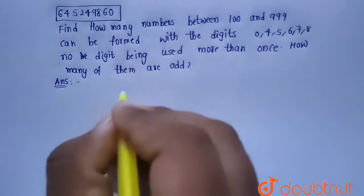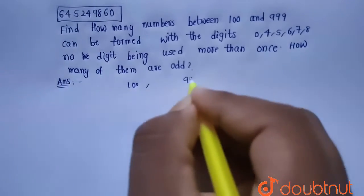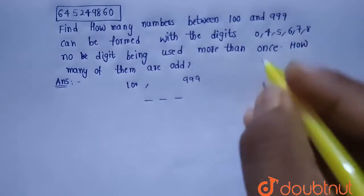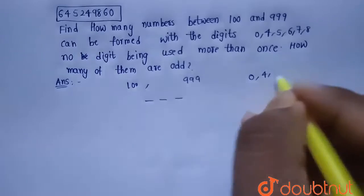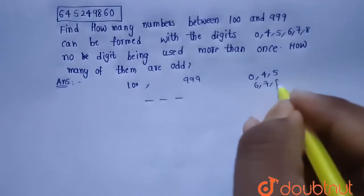So given the number should be between 100 and 999, the number should be a 3-digit number. Now given the available digits are 0, 4, 5, 6, 7, 8, total six digits are available.